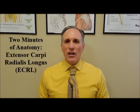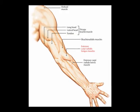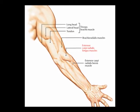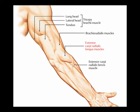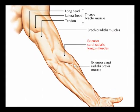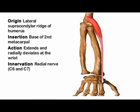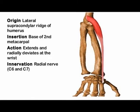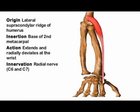The extensor carpi radialis longus is often abbreviated to the ECRL. It is classified as a posterior forearm muscle in the superficial group. The origin of the extensor carpi radialis longus is the proximal supercondylar ridge on the humerus.